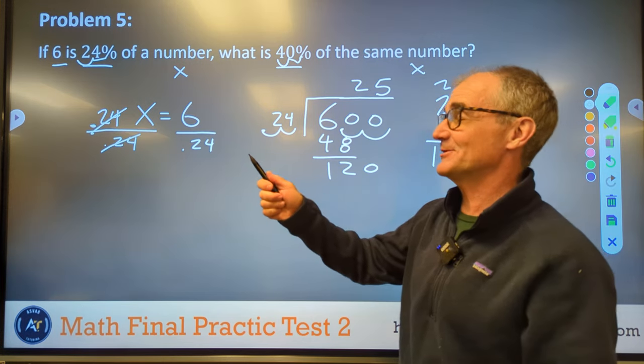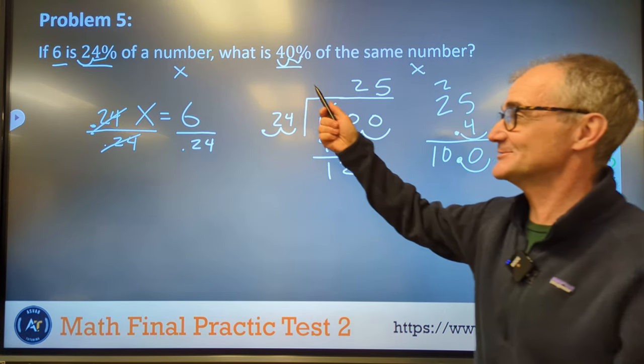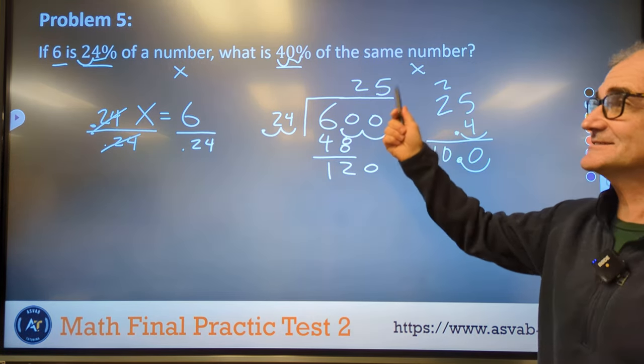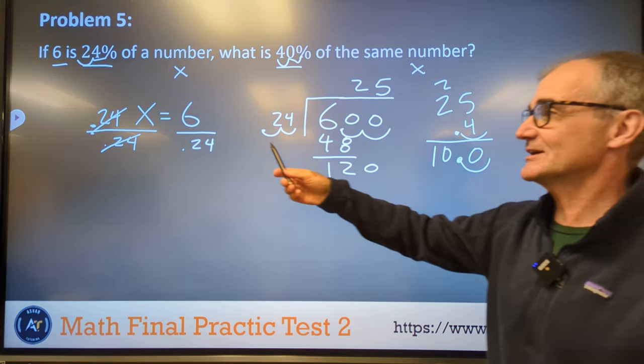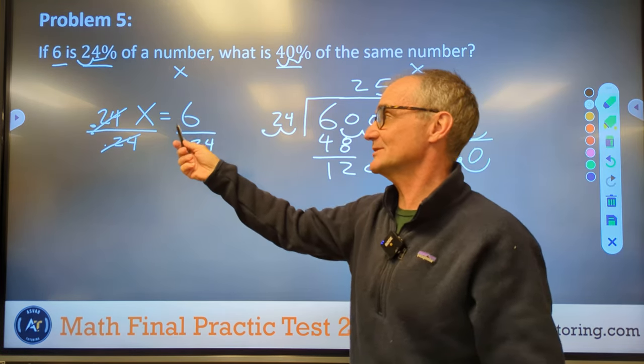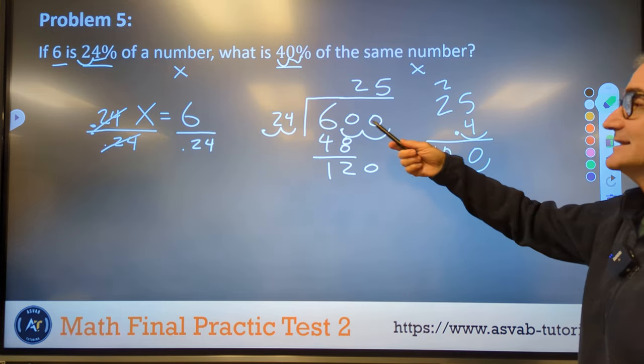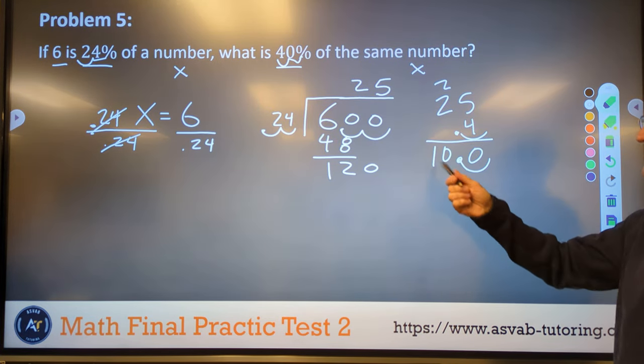It's a pretty tricky problem. First part of the trick is really decoding that whole sentence and realizing it's two separate problems. So you got to find the number x by this equation and then 40% of that number to find your solution 10.